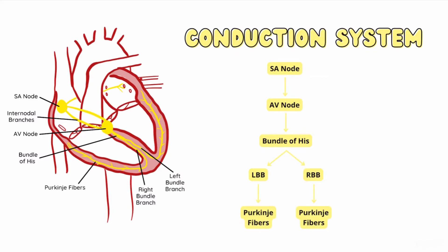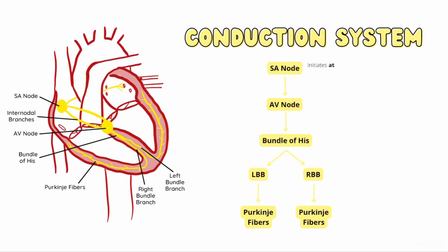The depolarization initiated by the SA node leads to atrial contraction. The depolarization initiated by the AV node leads to ventricular contraction.